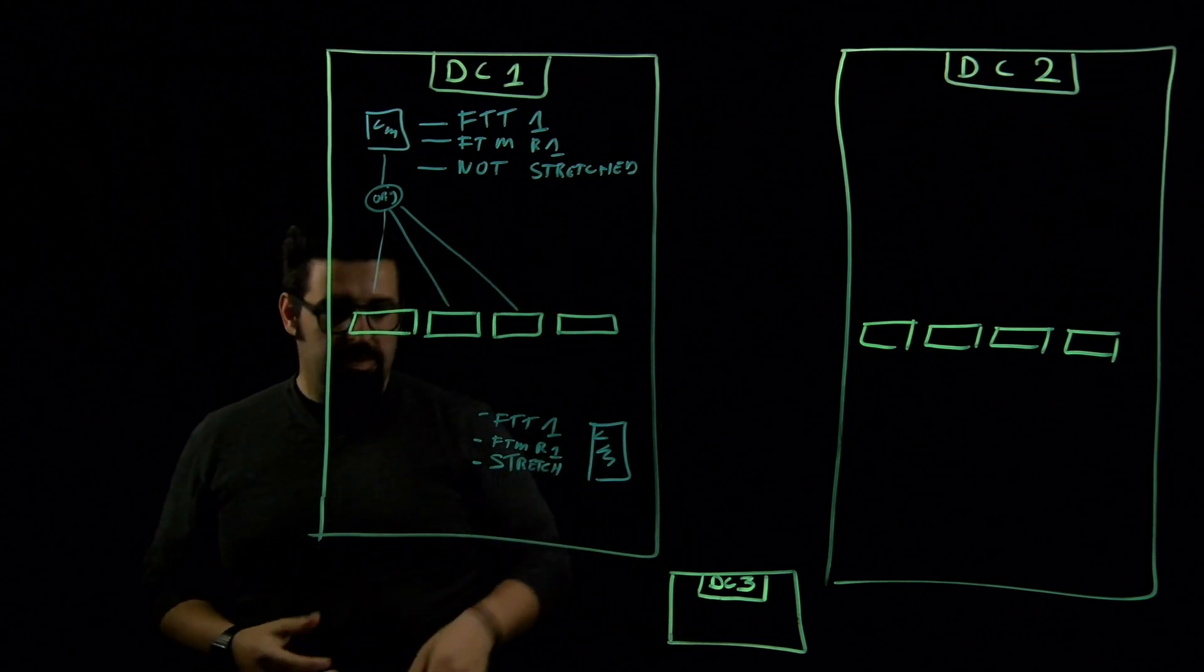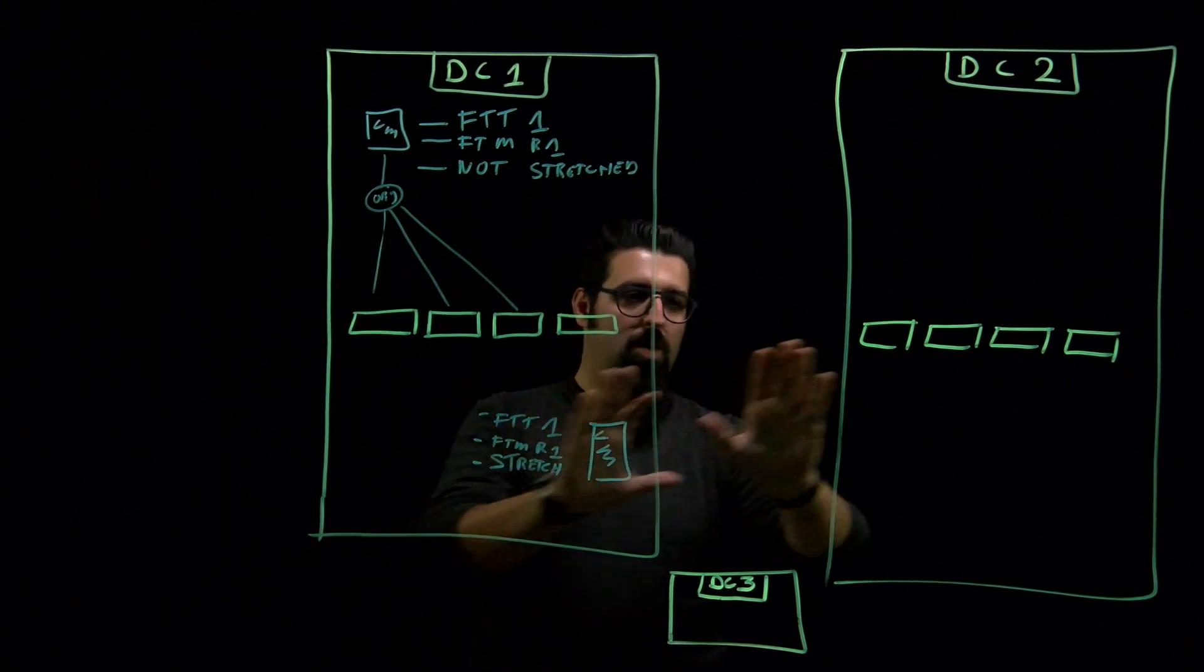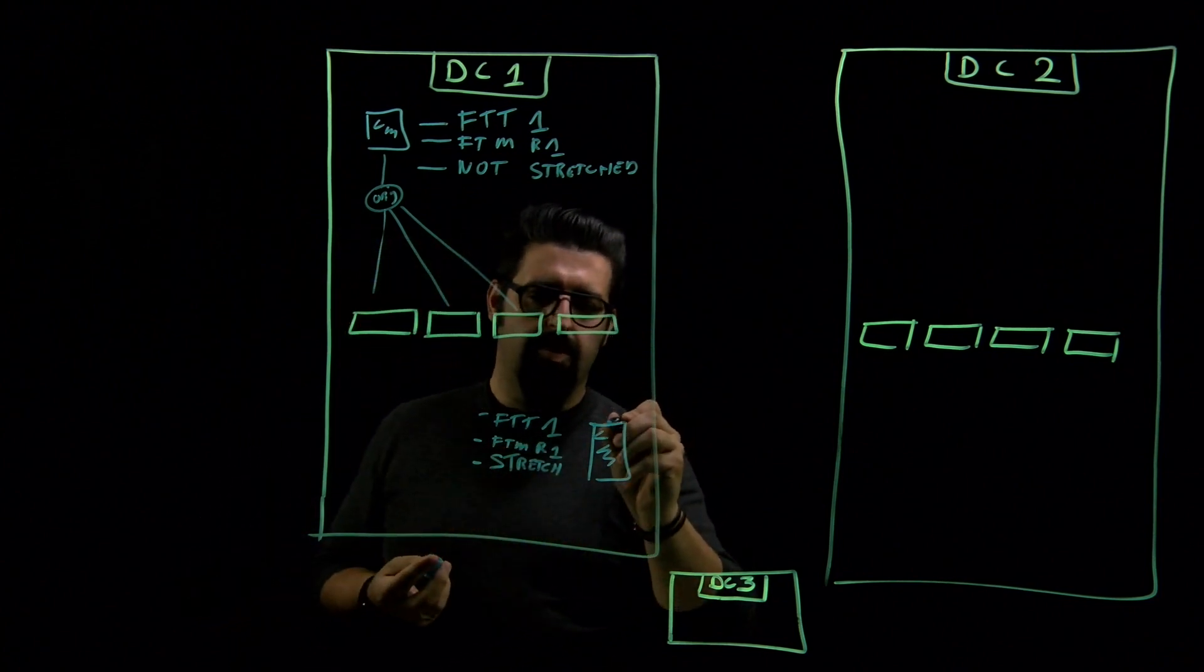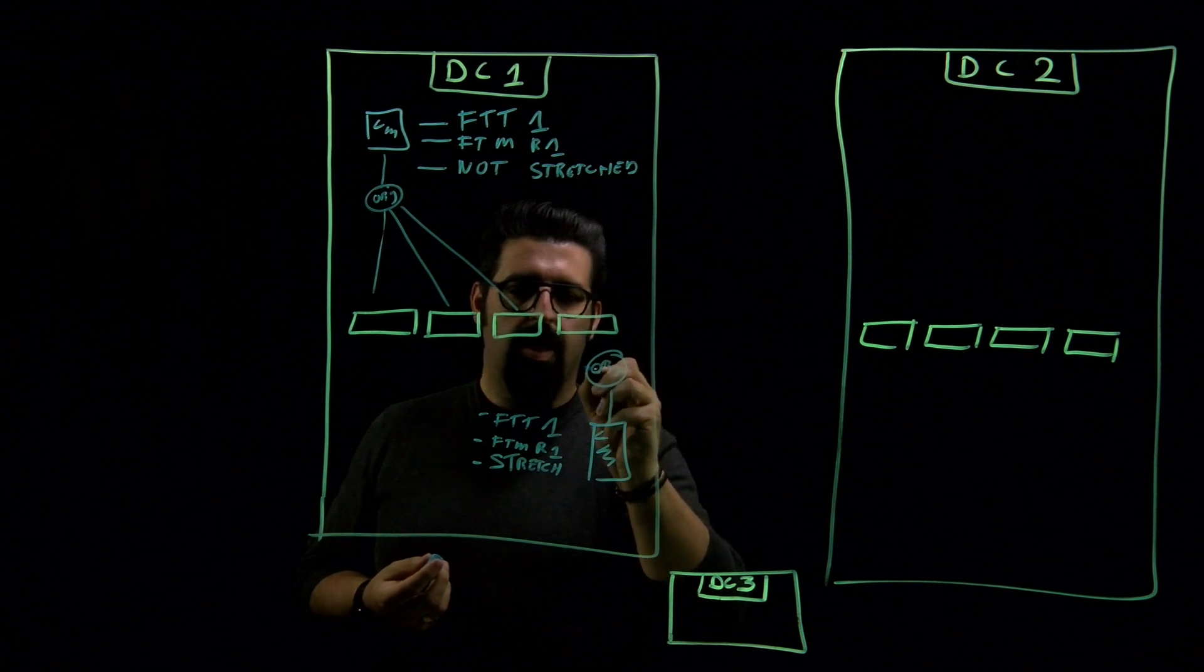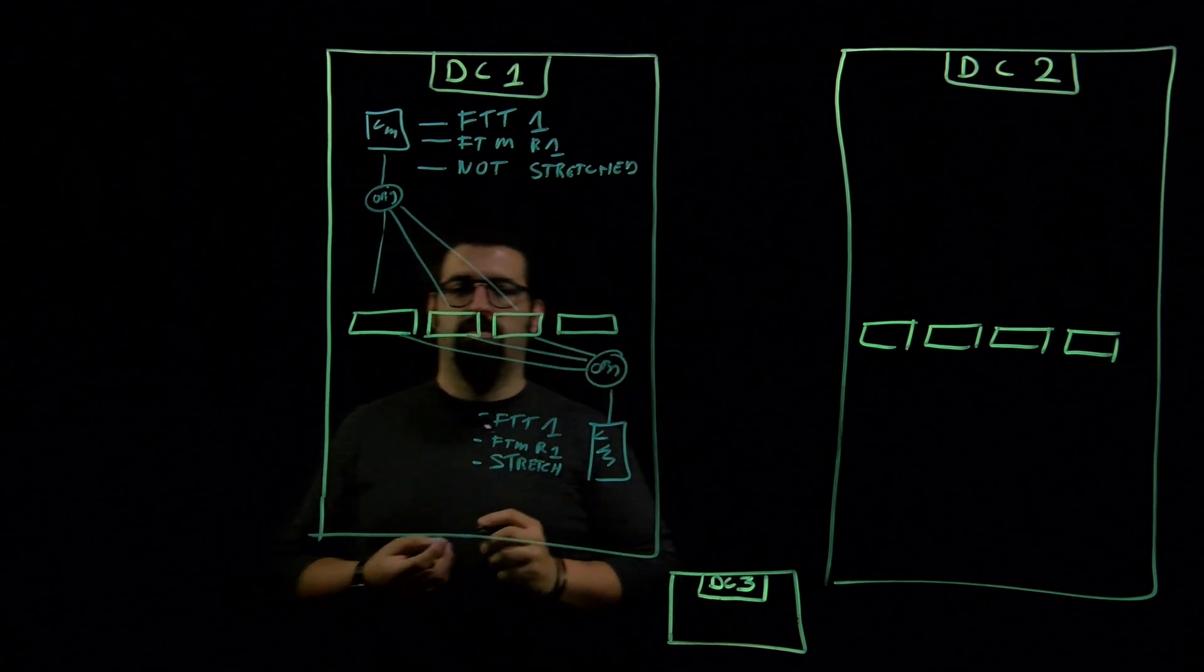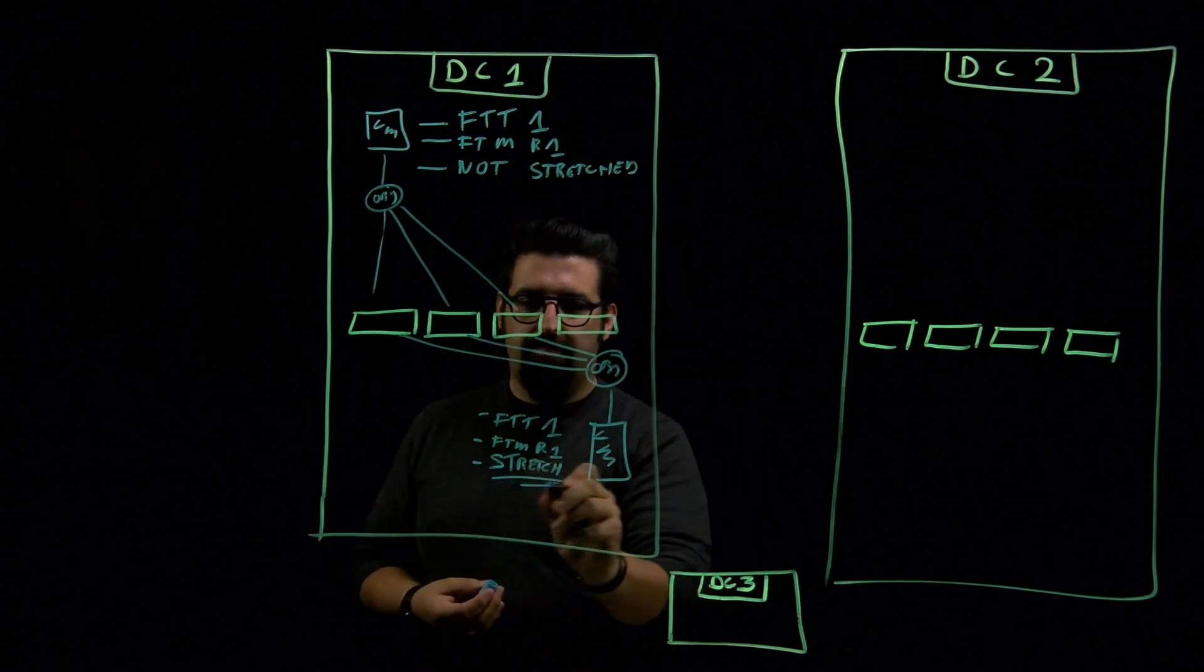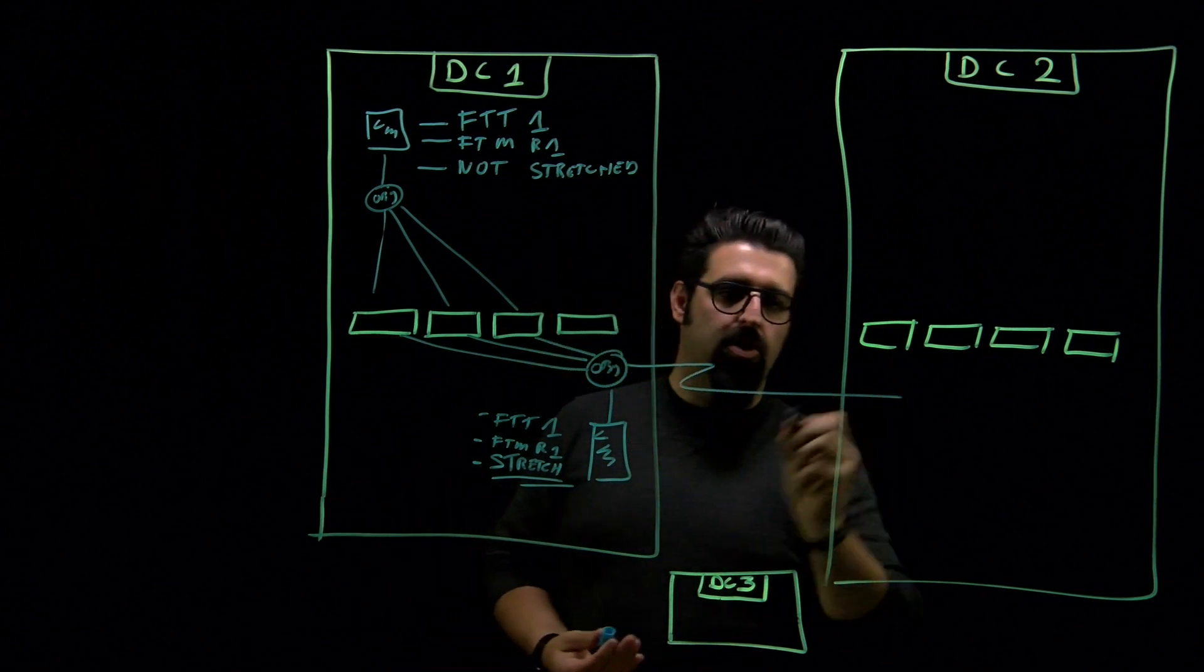What I mean with I would stretch it is I would like to have the same data that I have here, I would like to have on this side. This VM now becomes an object and this object has been distributed on this side. As I said here, I would like to have it stretched. And if I would like to have it stretched, this means that the data needs to go to the other side.